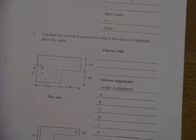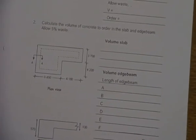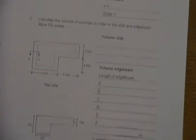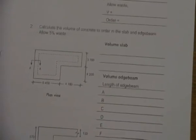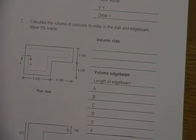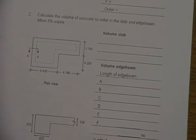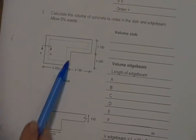We are doing exercise 2 on page 83 and the question reads: calculate the volume of concrete to order in the slab and edge beam, allow 5% waste. Now when we look at our slab here, it's an L-shaped slab, so this isn't a regular shape.